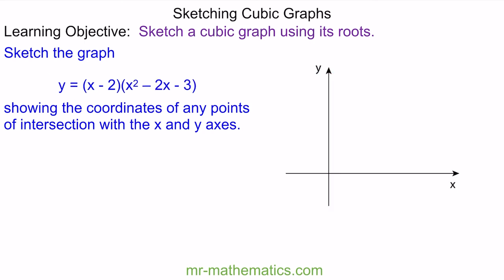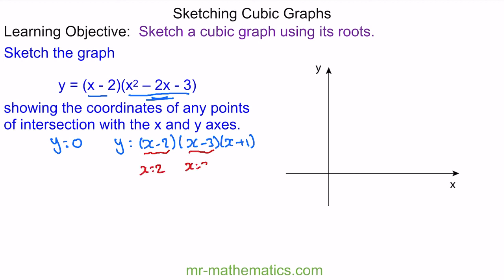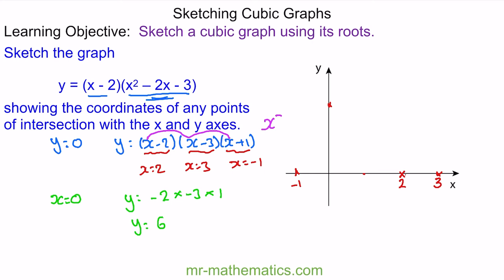This next question is slightly different because we have a linear term multiplied by a quadratic. To find our roots when y equals zero, we need to factorize the quadratic. We get y equals x minus two, multiplied by x minus three, multiplied by x plus one. So the roots are at positive two, positive three, and negative one. The intercept when x equals zero gives y equal to negative two multiplied by negative three multiplied by positive one, so y equals six. Because we have x cubed as a positive term, the graph will look like this.